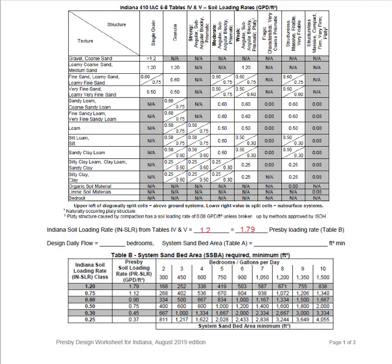Now we can finish determining how much sand bed area is needed for our system. We will start at the 1.79 loading rate and move to the right until we are intersecting the column for four bedrooms. The value at this intersection is our minimum sand bed area. In this case we will need at least 336 square feet of system sand bed area.